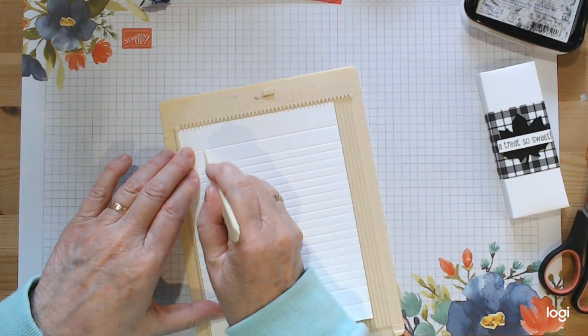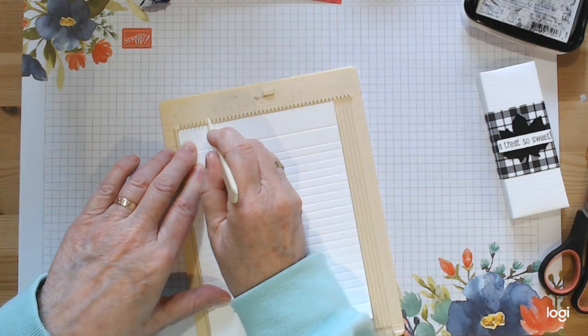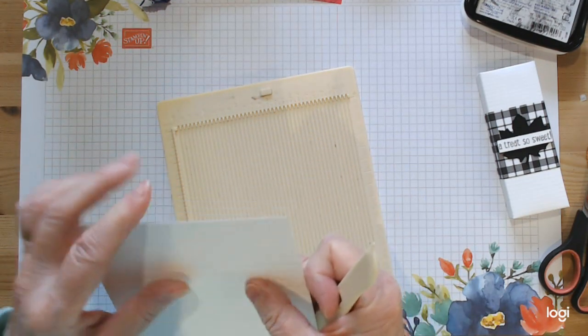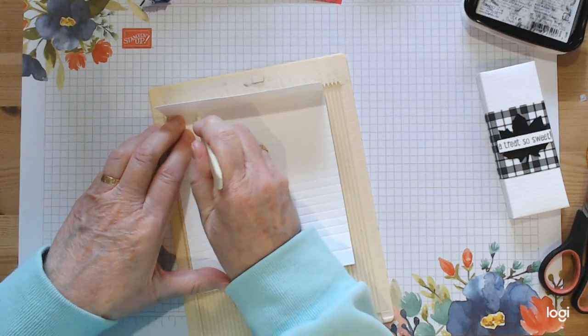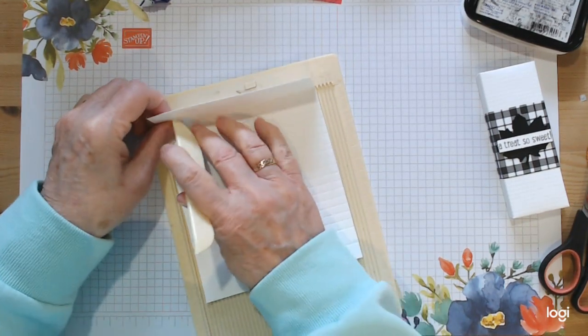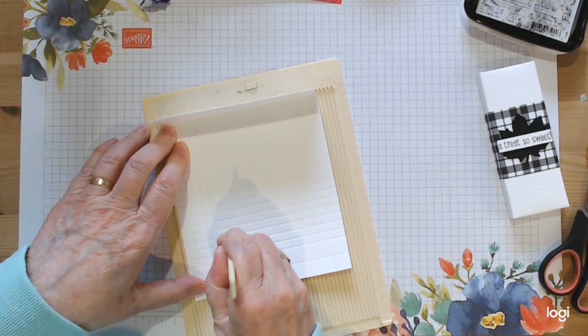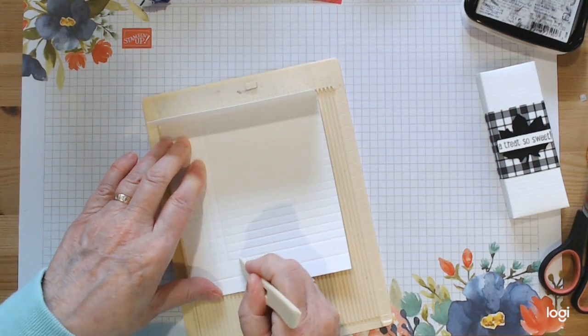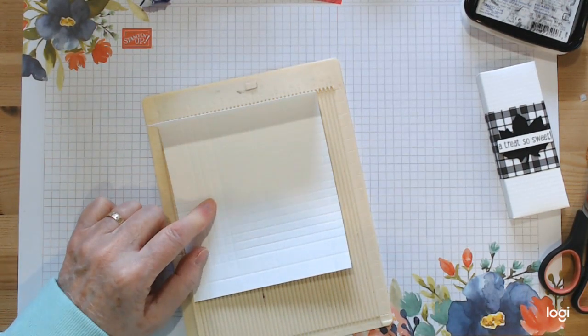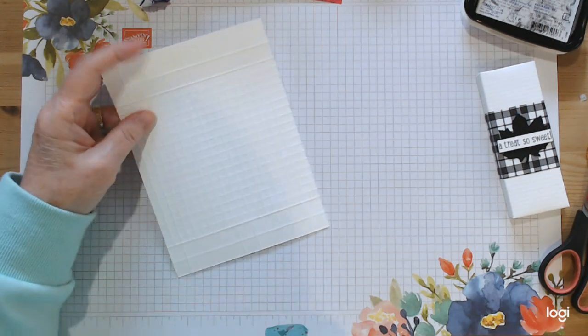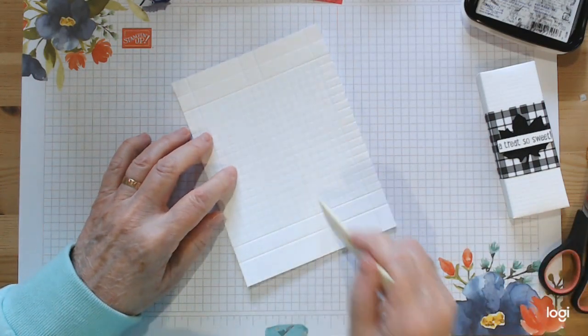You could also just run it through a nice embossing folder if you fancy, but this is a quick and cheap way of doing it if you want to add texture. Just keep going right down. Turn it around this side and start two in. From here down we're gonna go back in and do our embossing lines.